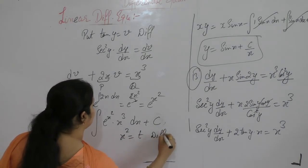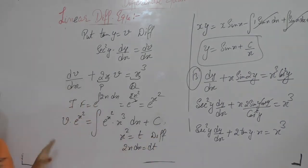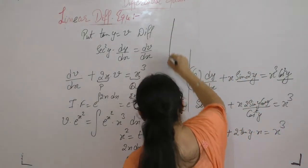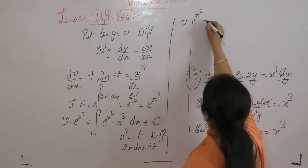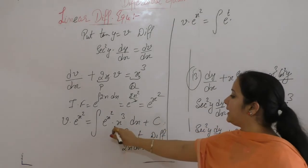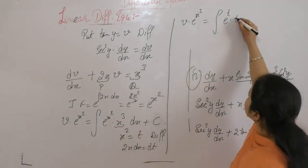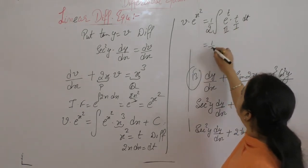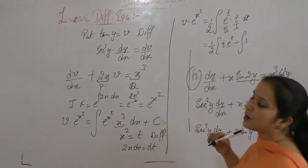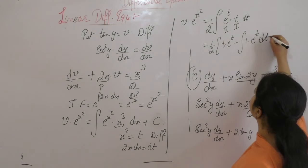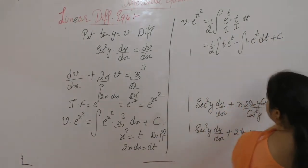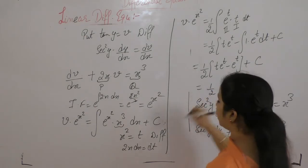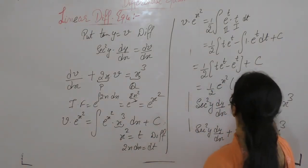After differentiating, 2x dx = dt. Using integration by parts: 1/2 times [t · e^t minus e^t] plus c. Substituting back t = x²: 1/2 · e^(x²) · (x² − 1) + c. So v · e^(x²) = (1/2) · e^(x²) · (x² − 1) + c.